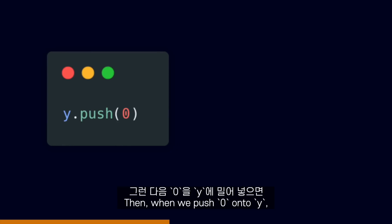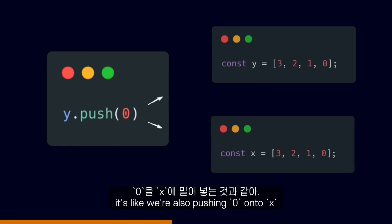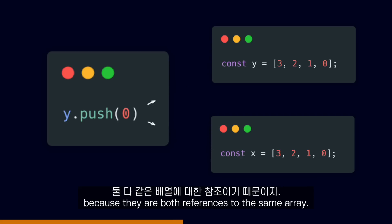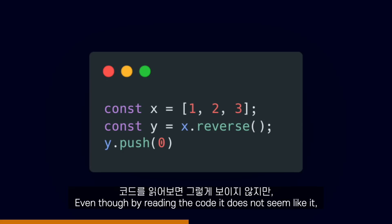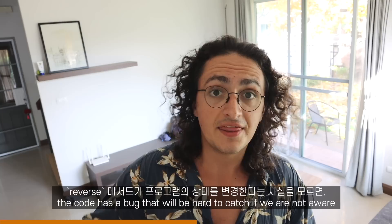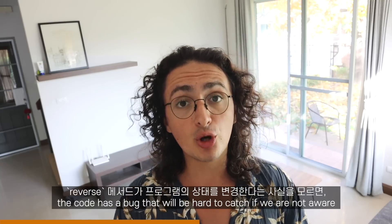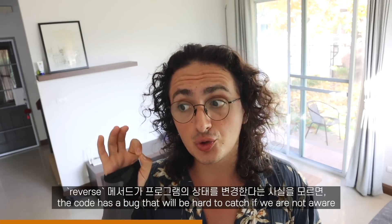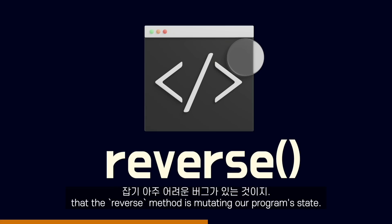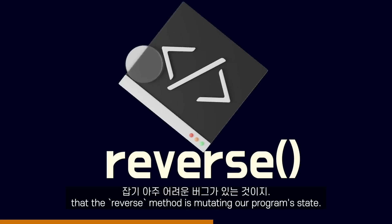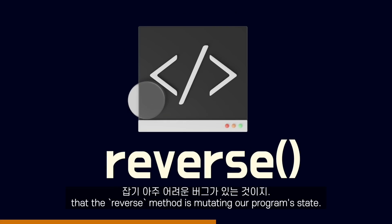Then when we push 0 onto Y, it's like we are also pushing 0 onto X because they are both references to the same array. Even though by reading the code it does not seem like it, the code has a bug that will be hard to catch if we are not aware that the reverse method is mutating our program's state.